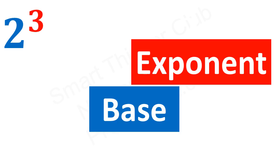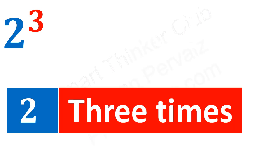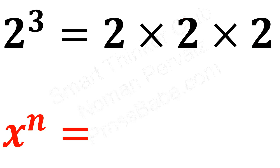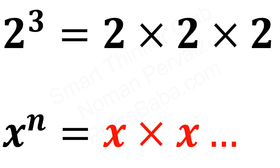For example, consider 2 raised to the power 3. Here, if we represent 3 by red color and 2 by blue, then 3 is the exponent and 2 is its base. 2 raised to the power 3 means 2 is multiplied 3 times, so we write 2 three times and multiply them. In this way, x raised to the power n means multiply x n times.